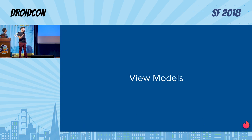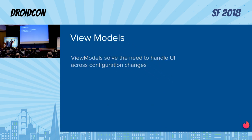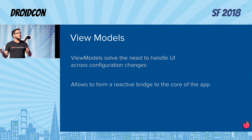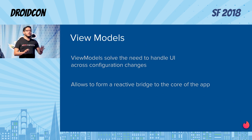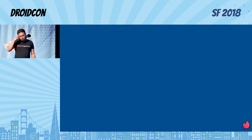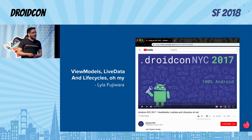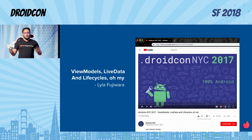View models — how many of you know what view models are? We're not going to do a deep dive. View models solve the need of handling UI across configuration changes. They survive longer than the lifecycle we have for fragments, activities, or lifecycle owners. They allow forming a reactive bridge between the core of your app and your UI, simplifying your UI code to just reacting to things coming from your core. They're bound to the lifecycle of an activity or fragment. If you want to know more, we highly recommend the talk from Droidcon New York by Lyla — she really goes in depth on view models and live data.